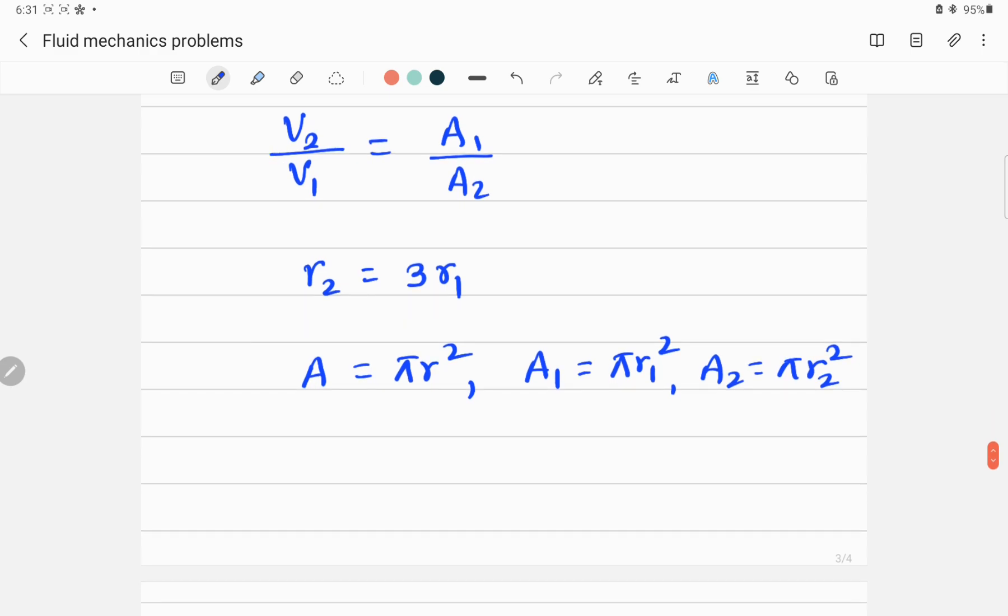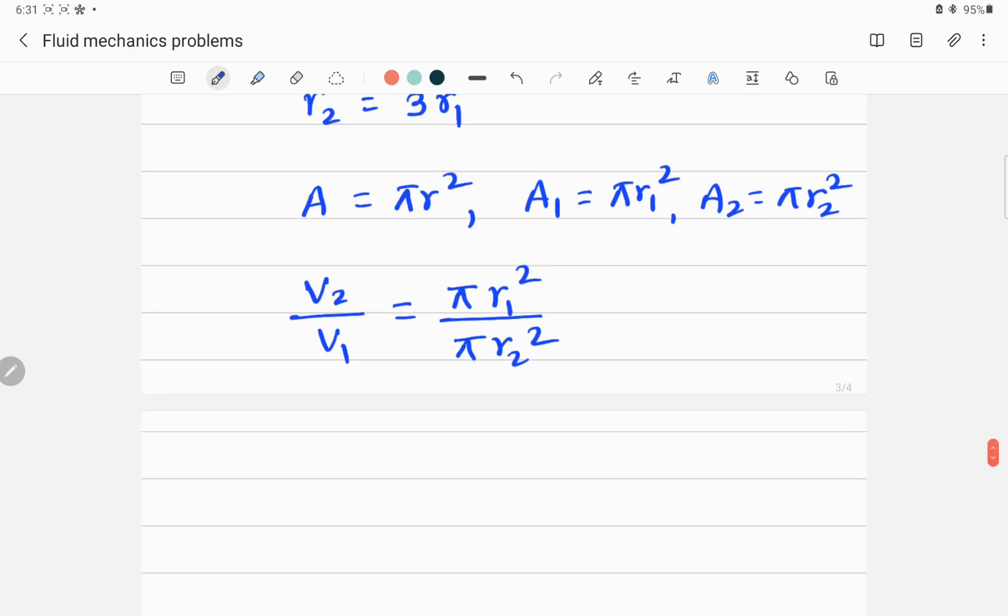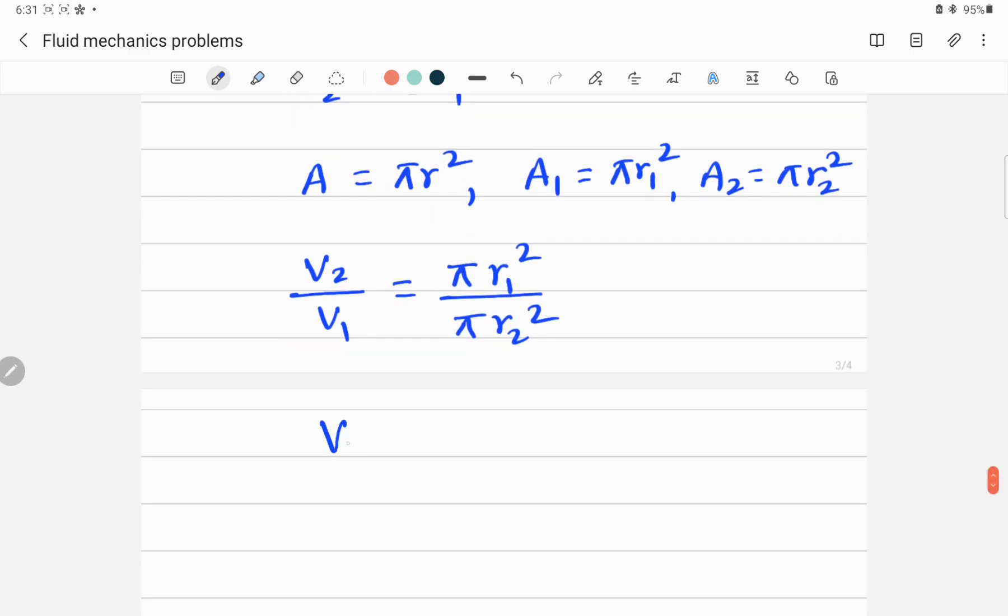Let's put this in the above equation. v2 divided by v1 is equal to πr1² divided by πr2². But r2 is 3r1, so I can put πr1² divided by π(3r1)².